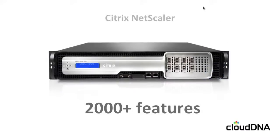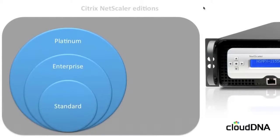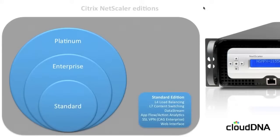When you're looking at ADCs or application delivery controllers, look for a feature-rich device with relevant features — things that are going to be useful for yourself. With NetScaler, there are over 2,000 features on the box, and we're not going to go through all of those today. To make life easy, the NetScaler is split by edition. If you were going to try and spec one of these out for your own environment, the first question is: what do I actually want it to do? Standard Edition is our entry-level device in terms of functionality.